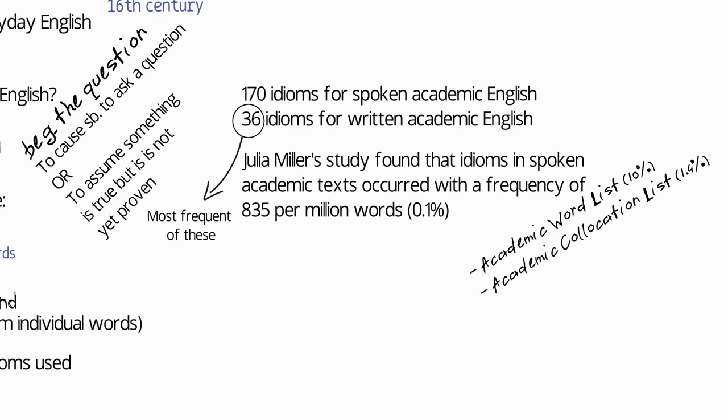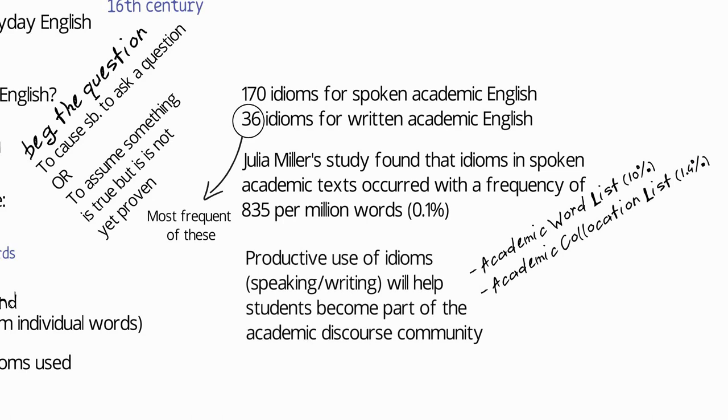To put that in context of other academic lists, the academic word list covers around 10% of academic texts, while the academic collocation list covers around 1.4%. So idioms obviously are not very frequent in academic English, but they are still used in academic English.